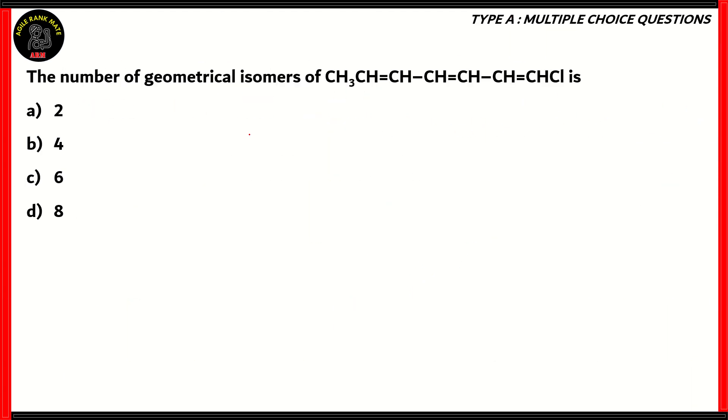Now let's look at the final question for today. The number of geometrical isomers of the product CH3-CH=CH-CH=CH-CH=CHCl is 2, 4, 6, or 8.